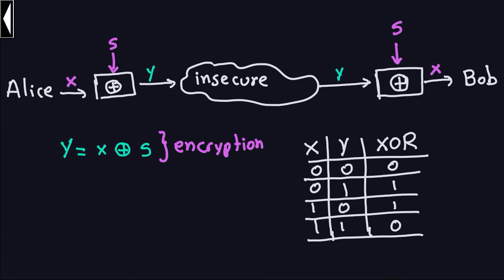Hello and welcome again. Last time we discussed the process of decryption using the stream cipher and we saw that the process is again just using exactly the same situation. You have a source here and you input your bits here, and so what you did for encryption is exactly the same as you do for decryption — exactly the same operation.